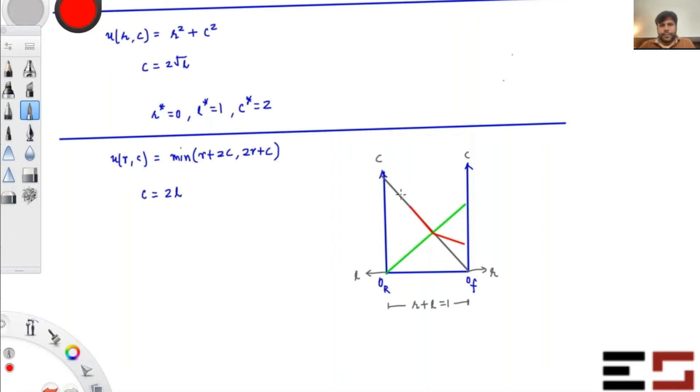So all these are Pareto efficient. Is that clear? So just find the set of all efficient allocations. They are, of course, on this line C is equal to 2L. You just have to use that.